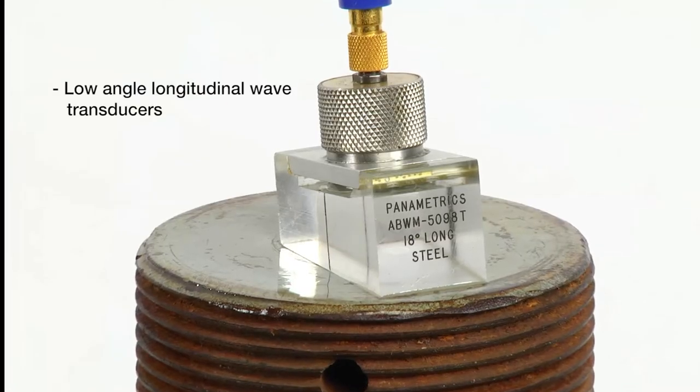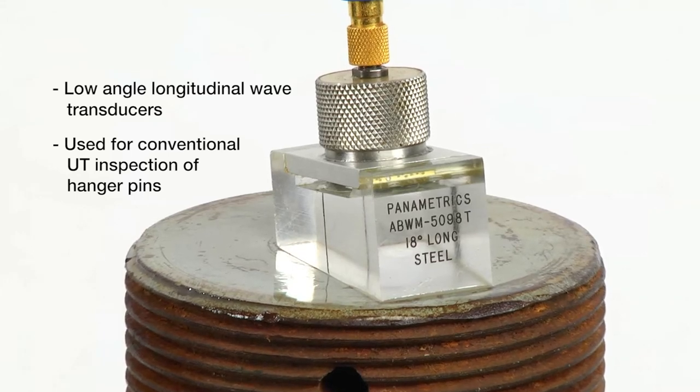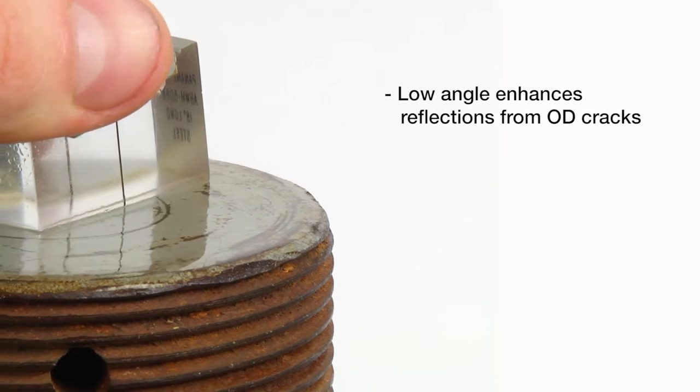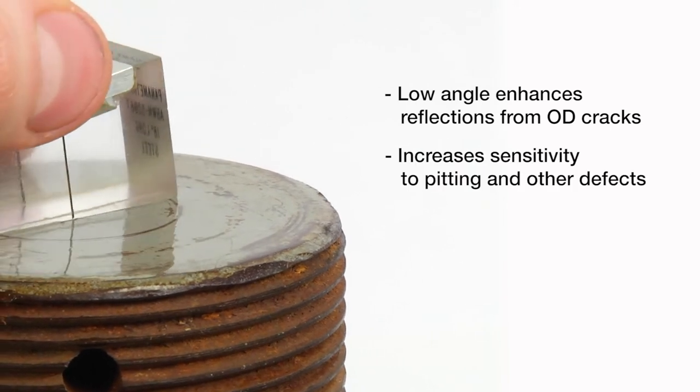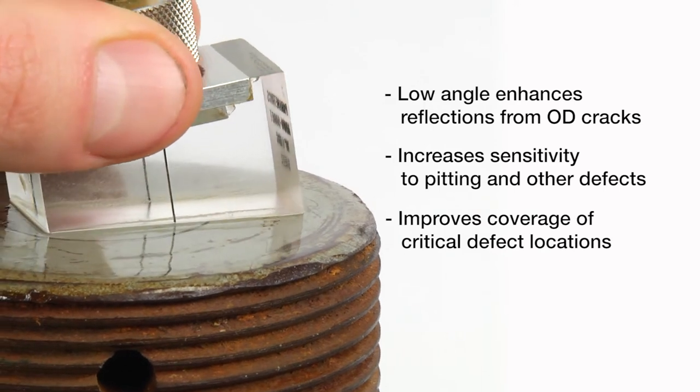Low angle longitudinal wave transducers are typically used for conventional UT inspections of hanger pins. The low angle enhances reflections from outside diameter cracks, increases sensitivity to pitting and other defects, and improves coverage of the critical defect locations.